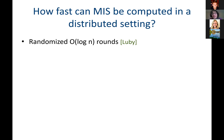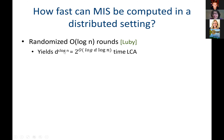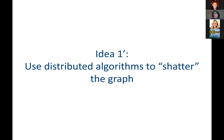So what about maximal independent set? There's a log-N round algorithm due to Luby — that was one of the first ones. The problem is that plugging log-N into D-to-the-log-N gives a local computation algorithm that's not even better than linear — it ends up being N-to-the-log-D, which is worse than linear. So this is not going to do it for us. What we're going to do instead is use distributed algorithms to shatter the graph into small pieces.